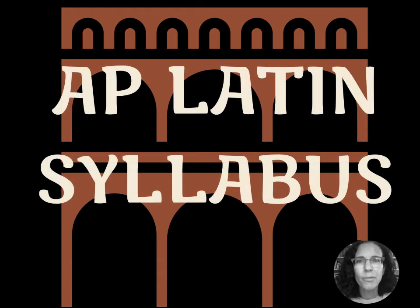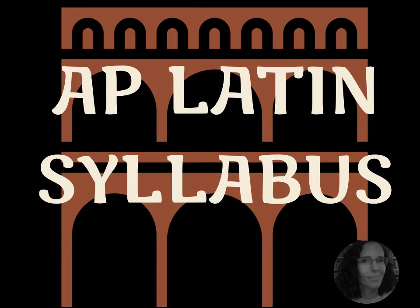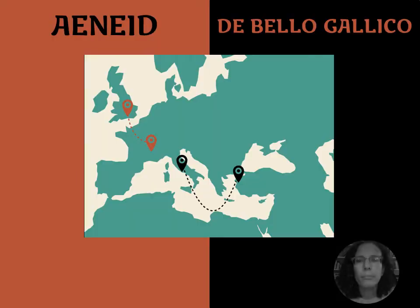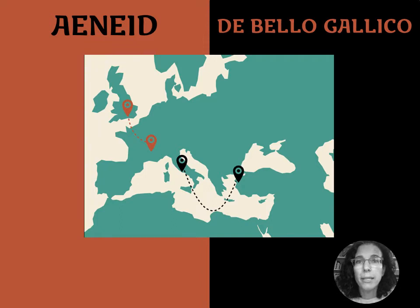Hello and welcome. In this video, I'm going to go over what is involved in the AP Latin syllabus to give you an idea of the work you have in store for you. Over the course of the year, you're going to be reading excerpts from Virgil's Aeneid and Caesar's De Bello Gallico, or About the Gallic War.